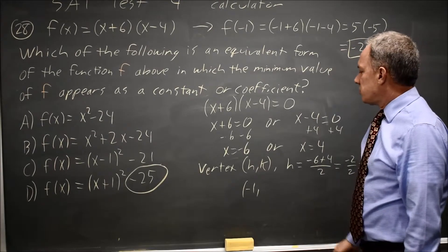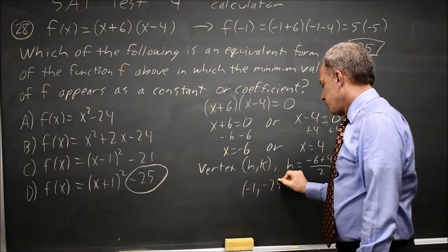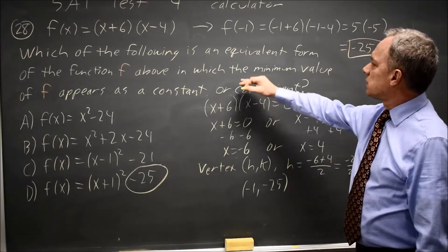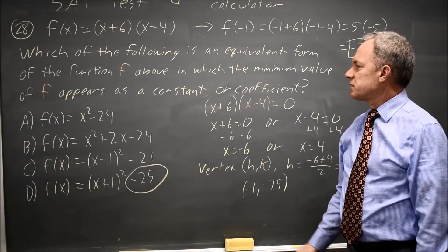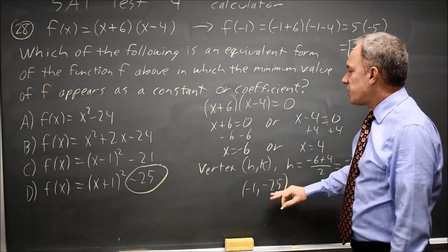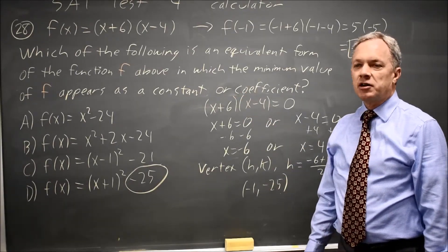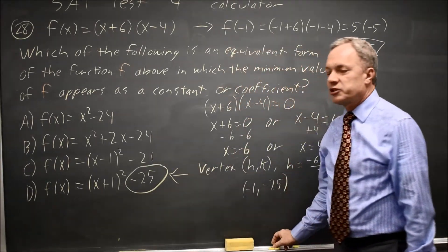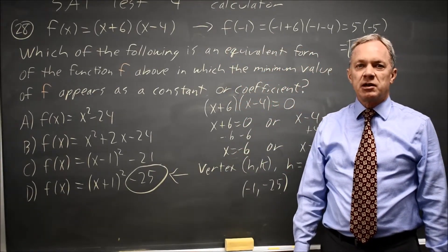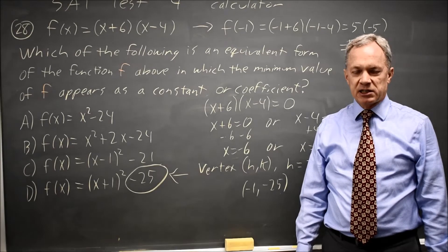So the minimum value of the function, which they said they want an equivalent form in which the minimum value appears as a constant or coefficient, minimum value is negative 25. The only option that has negative 25 as a constant or coefficient is choice D. So that must be the correct answer to the question the College Board is asking.